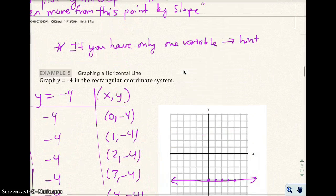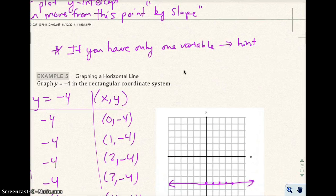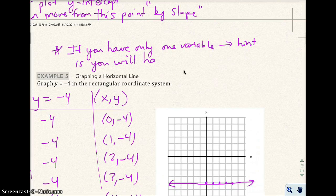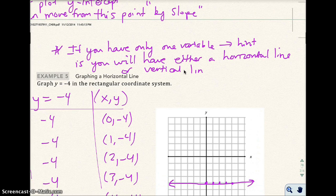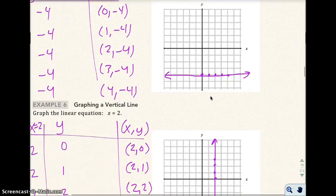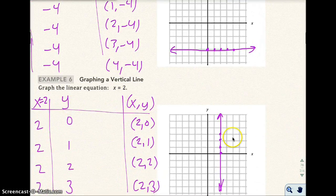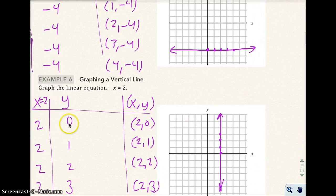Okay. The hint is if you have only one variable, the hint is you will have either a horizontal line or a vertical line. Some people memorize it. And they memorize if you have y equals a number, they're going to have a horizontal line. Some people memorize if you have x equals a number, you're going to have a vertical line. But I always tell my students that if I forget, I just make a little table and just start putting in values.